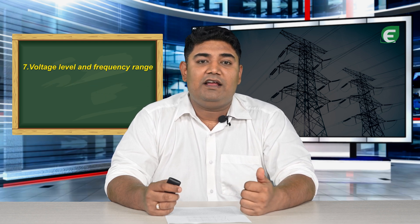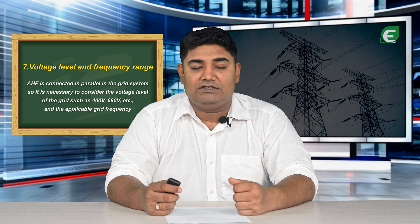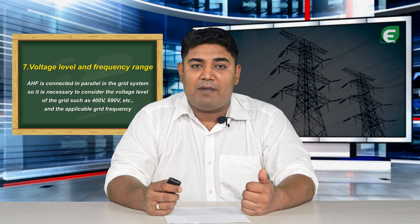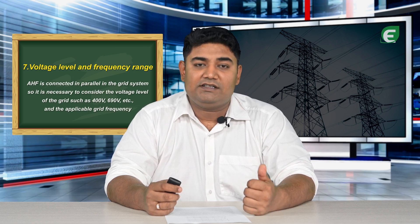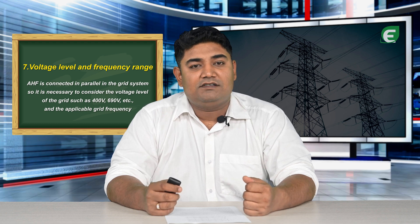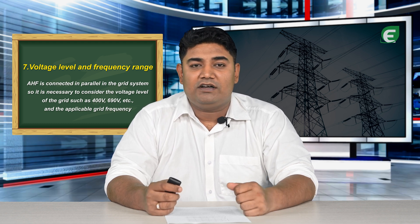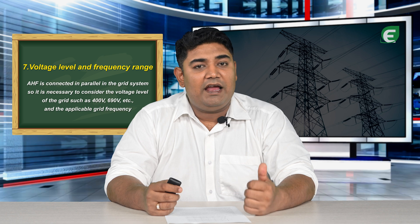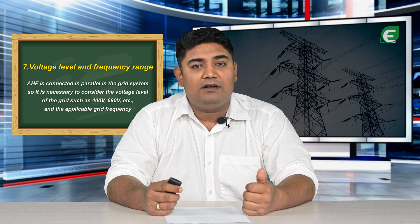The voltage level and frequency range are also important considerations. AHF is usually connected in parallel in the grid system, so it is necessary to consider the voltage level of the grid, such as 400V or 690V, and the applicable grid frequency.